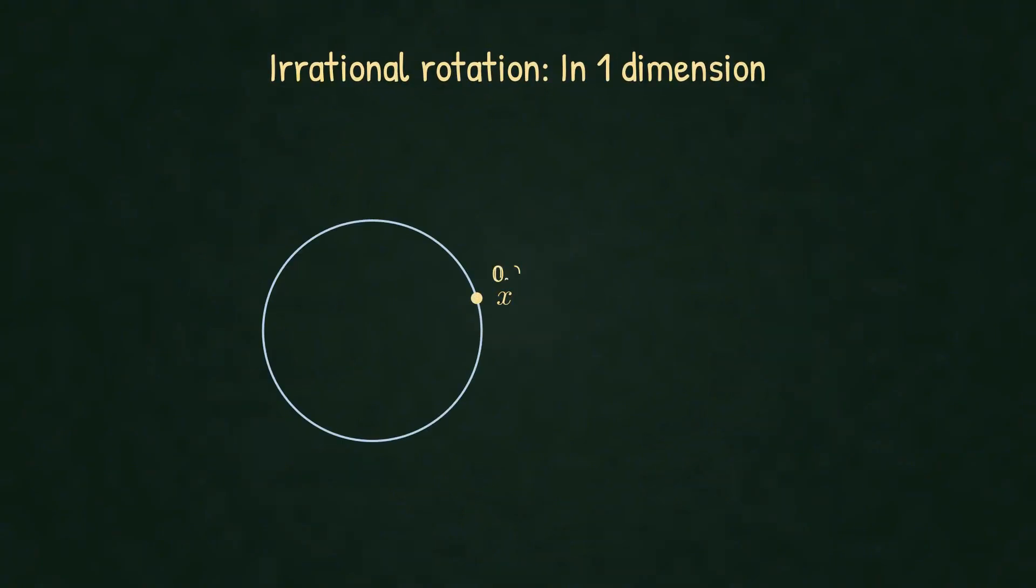It's surprisingly simple: irrational rotation. In one dimension, start at any point x0 on the circle, rotate by an irrational angle α each step, take the fractional part—that's your sequence. The modulo 1 operation is just the continuous rotation wrapped back to the interval.